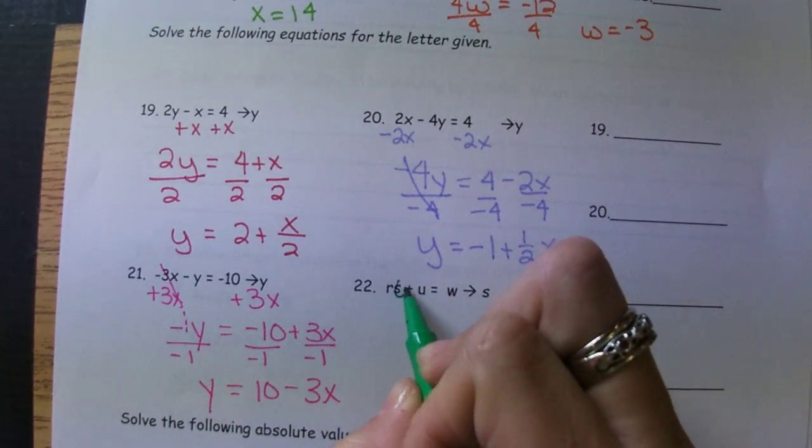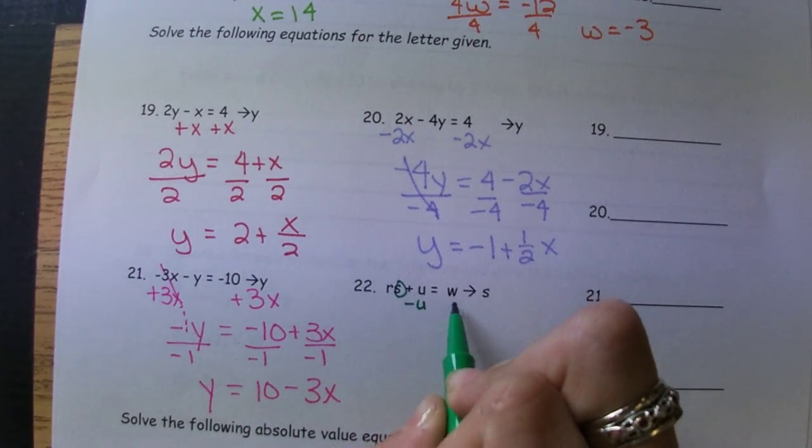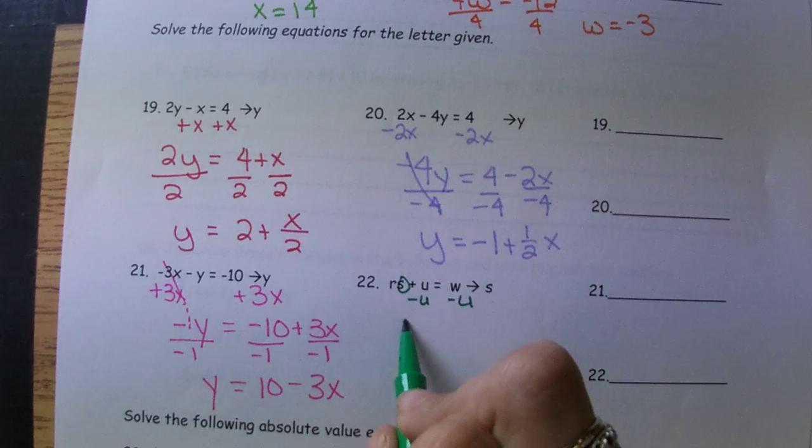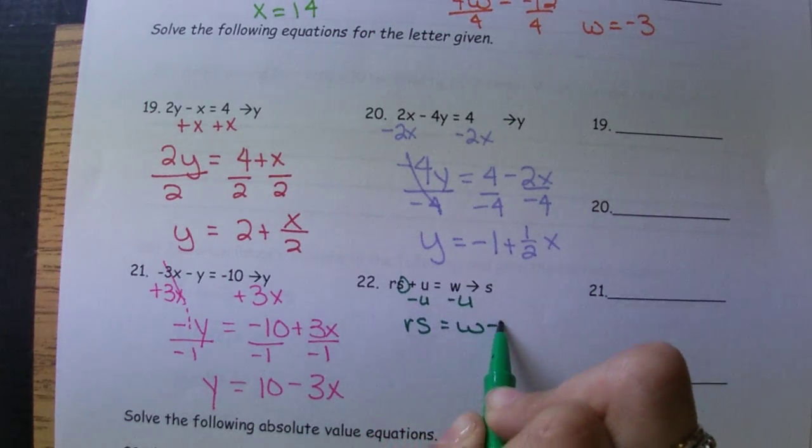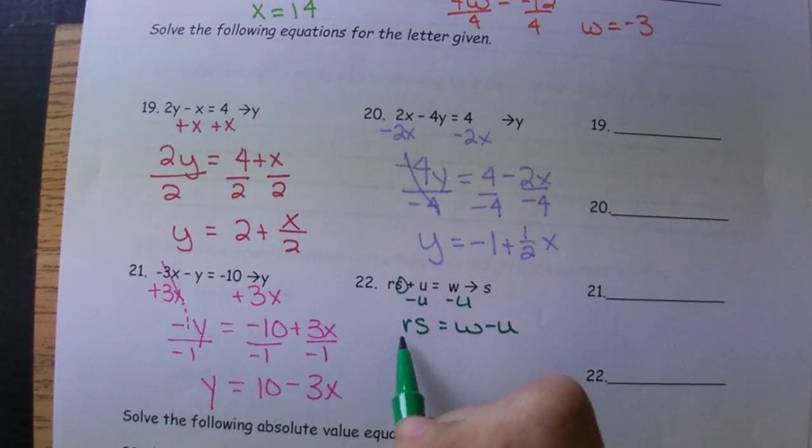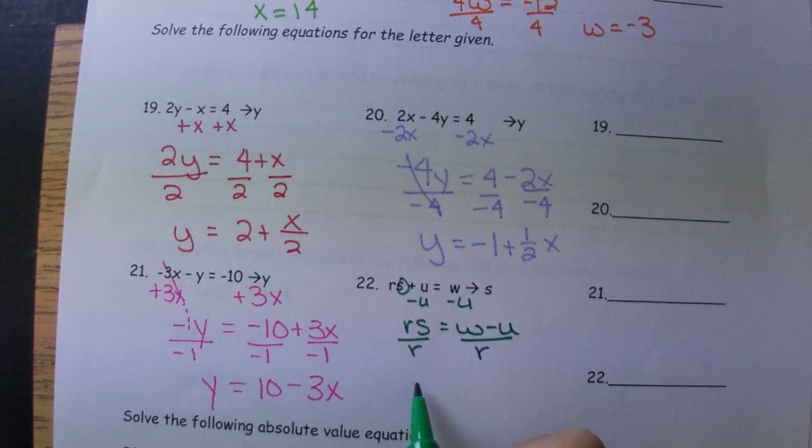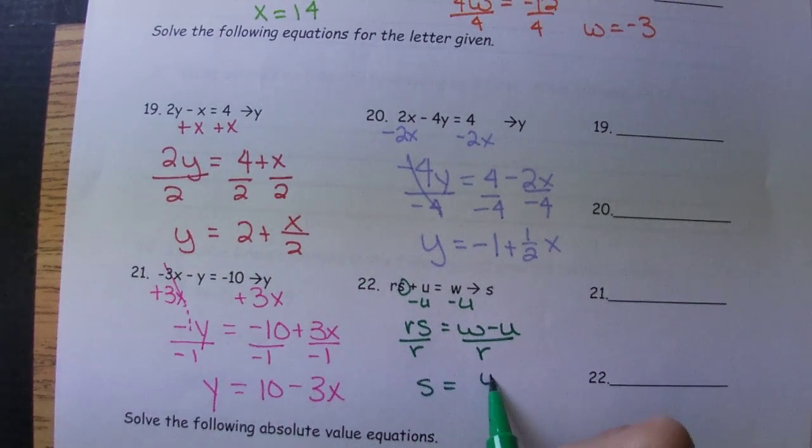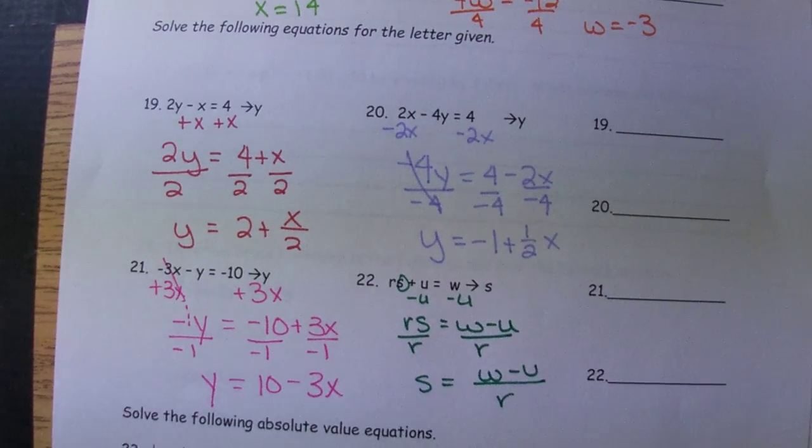22 we want to solve for S. So we'll undo any addition and subtraction first. So we'll have RS equals W minus U. Then we'll undo multiplication with division. We can't simplify it any further, so we'll just get W minus U all over R as our final answer.